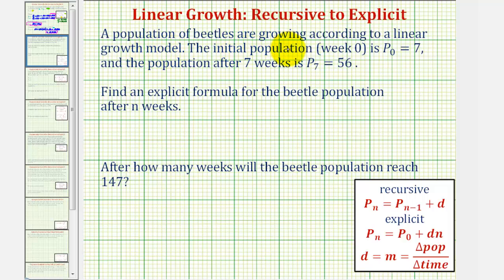A population of beetles is growing according to a linear growth model. The initial population is p₀ = 7, which means at week zero the population was seven, and the population after seven weeks is p₇ = 56.